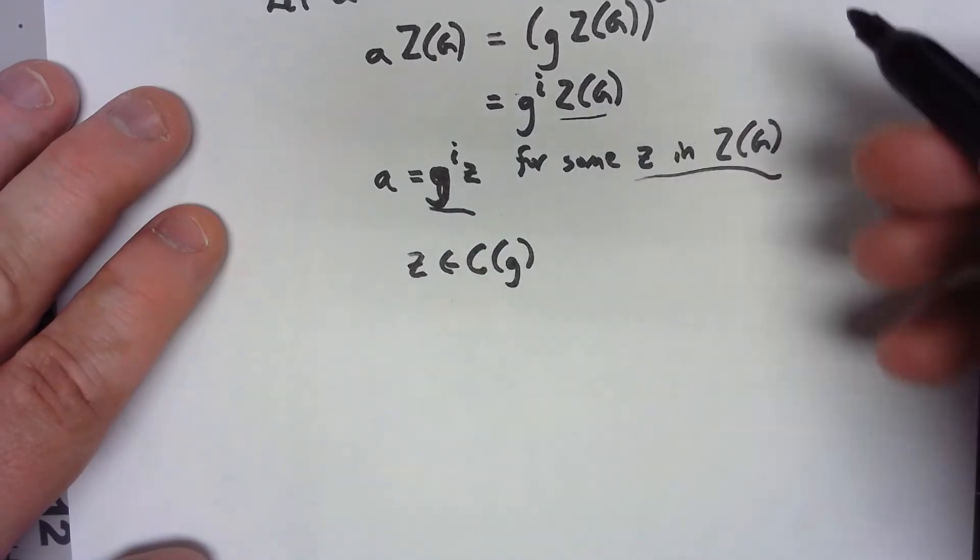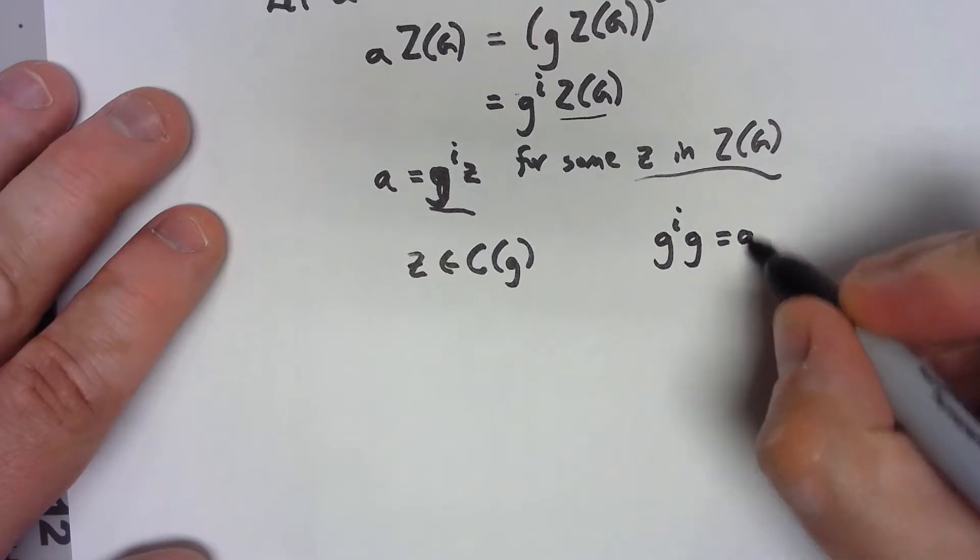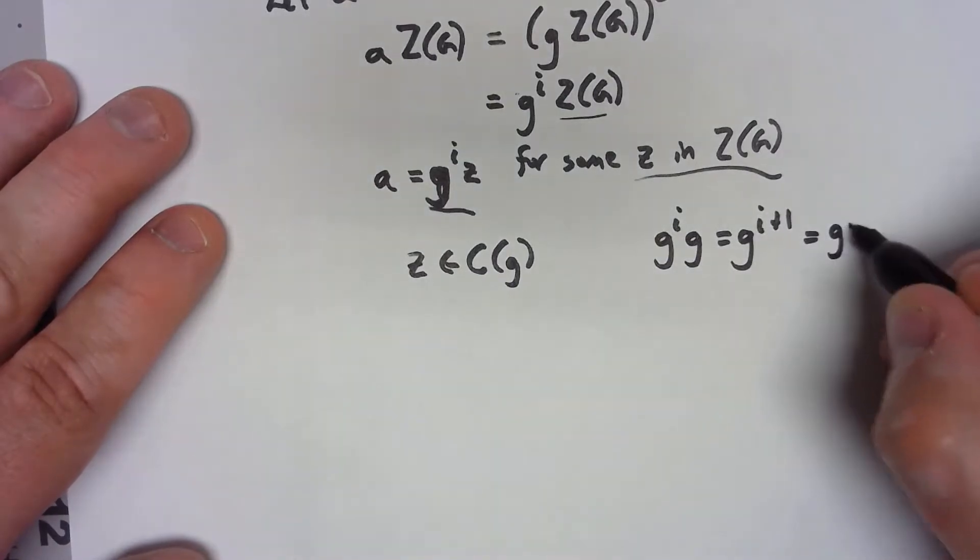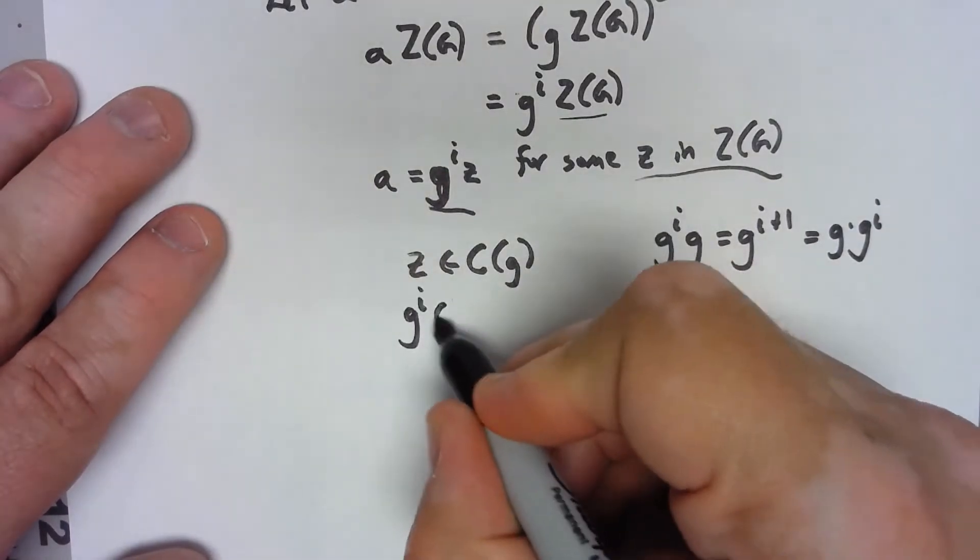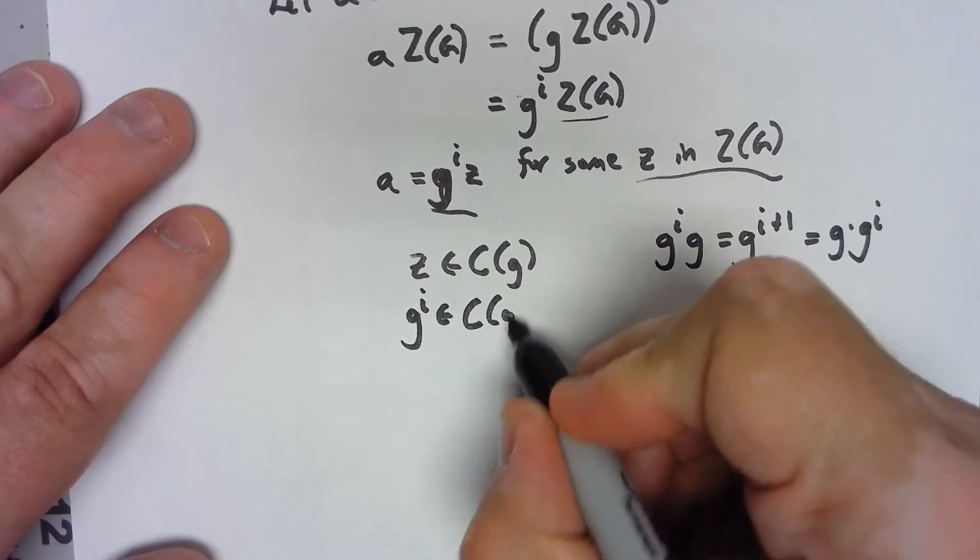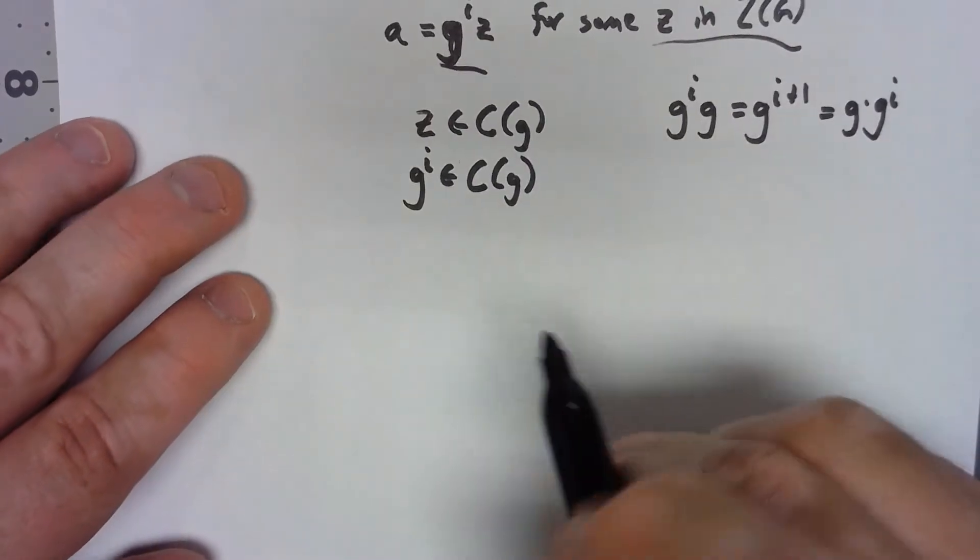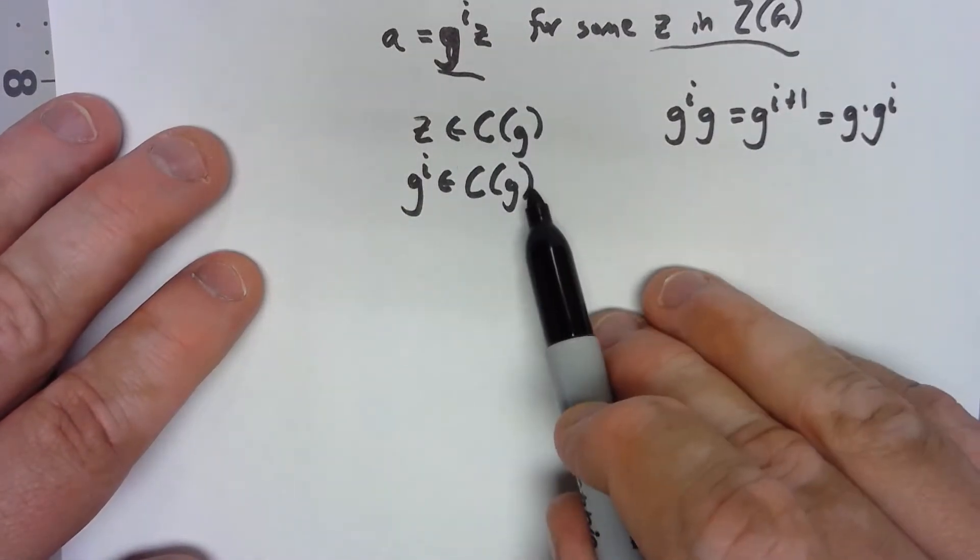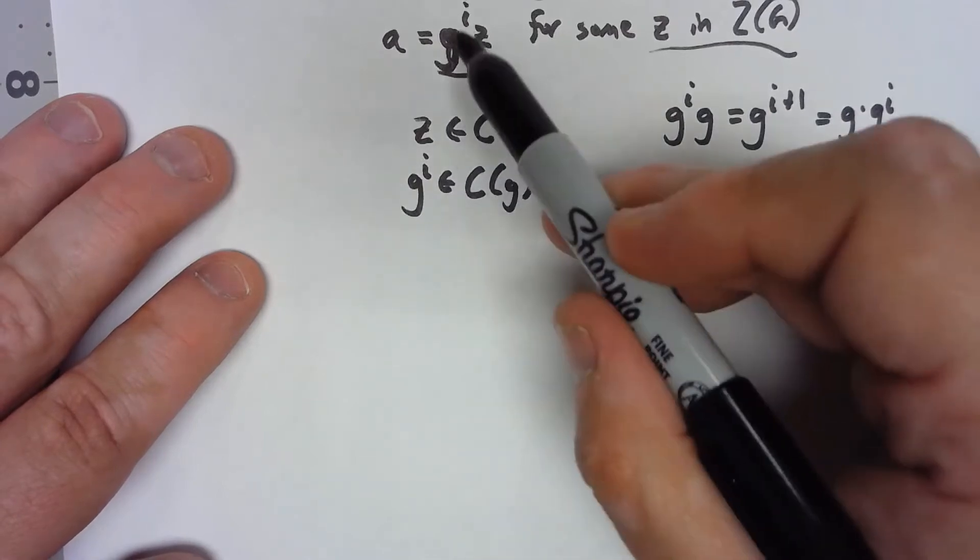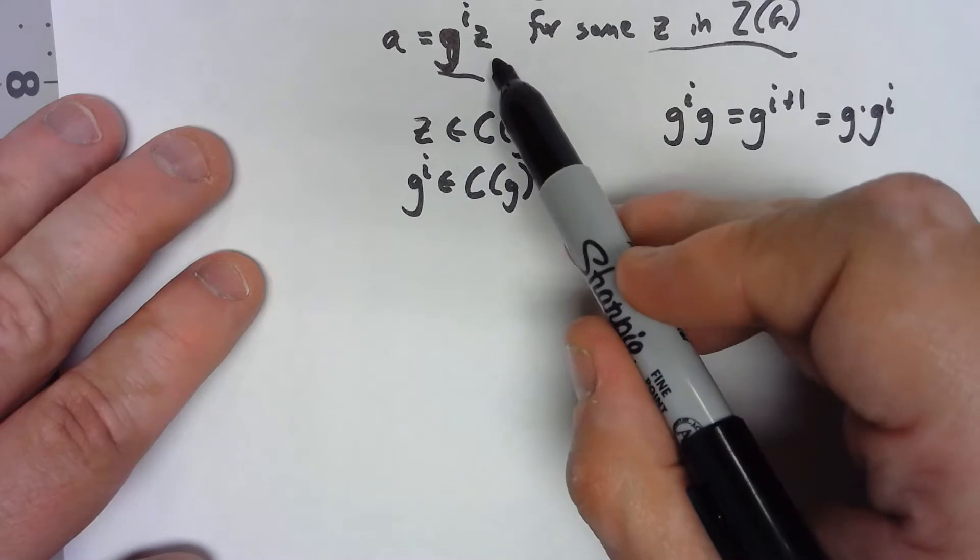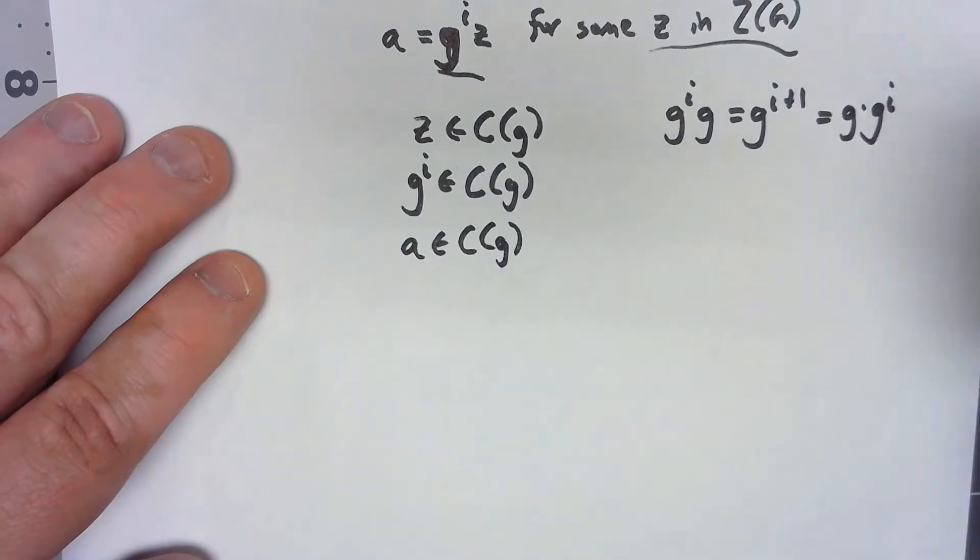But of course, G to a power has to commute with G. G to the i times G has to be G to the i plus one power, is the same as G times G to the i. So G to the i is in the centralizer of G. But remember, the centralizer of G is in fact a subgroup. So if both of those are in the subgroup, then their product G to the i times Z is in the subgroup. So that means that A has to be in the centralizer of G.